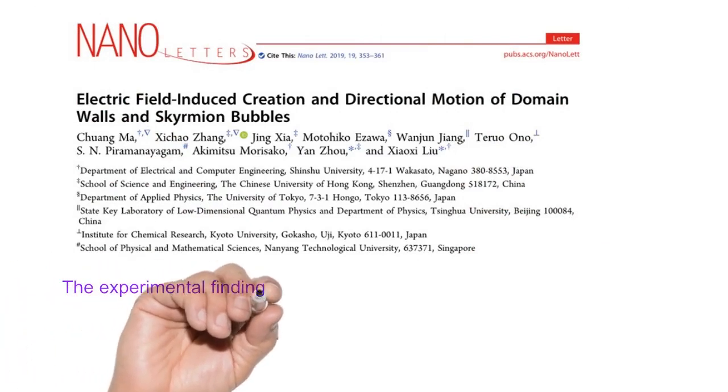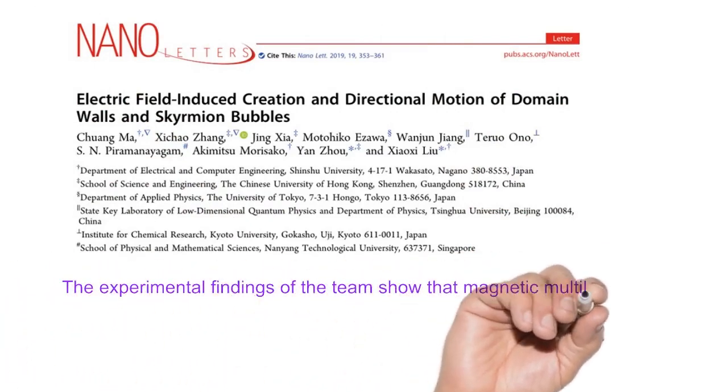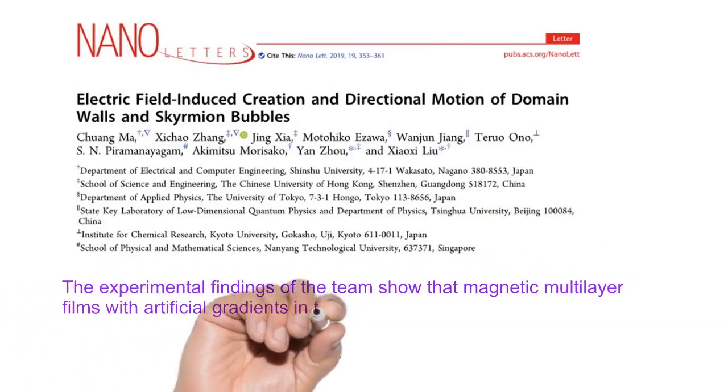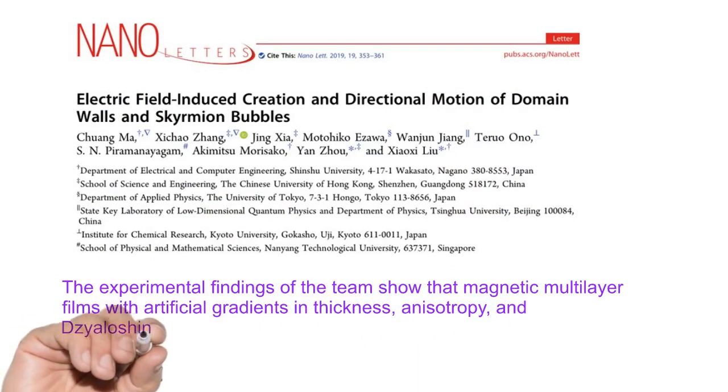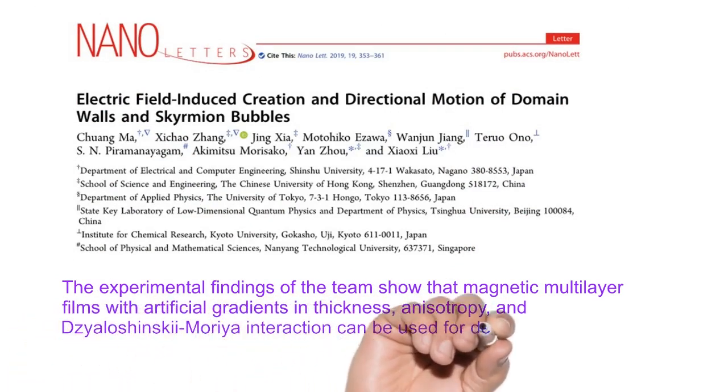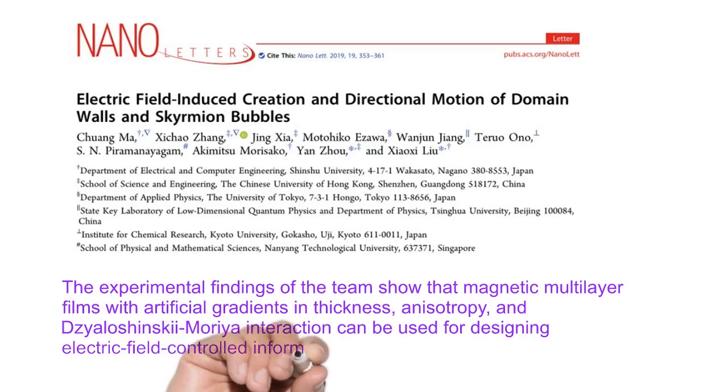The experimental findings show that magnetic multilayer films with artificial gradients in thickness, anisotropy and DM interaction can be used for designing electric field-controlled information devices with ultra-low energy consumption.